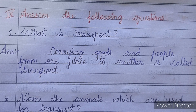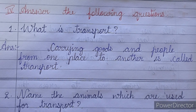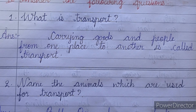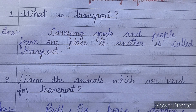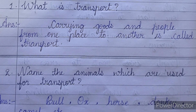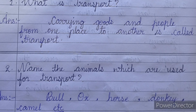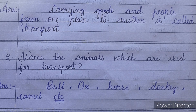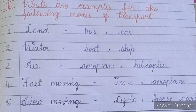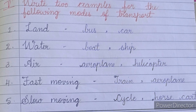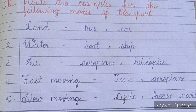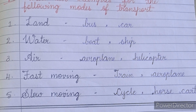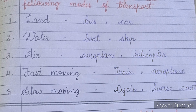Fourth main: Answer the following questions. Number one: What is transport? Answer: Carrying goods and people from one place to another is called transport. Number two: Name the animals which are used for transport. Answer: Bull, ox, horse, donkey, camel, etc.